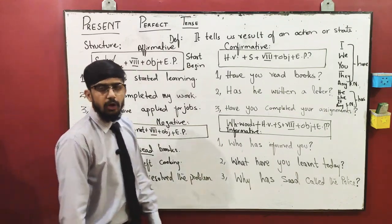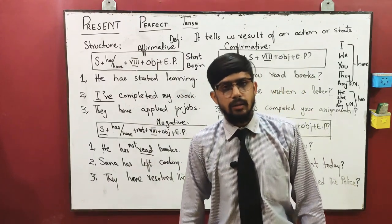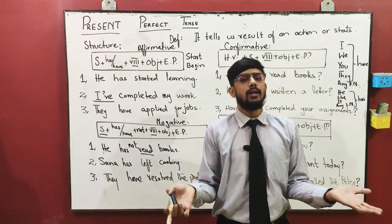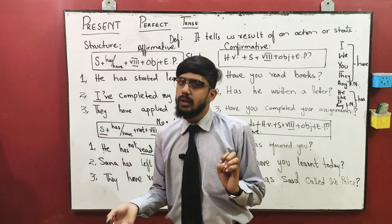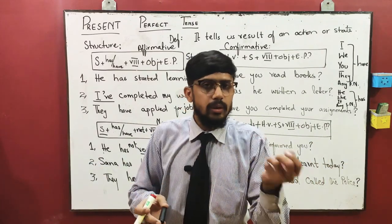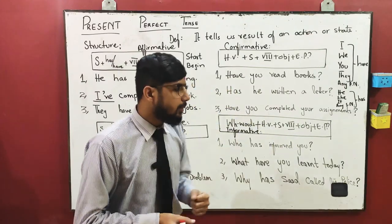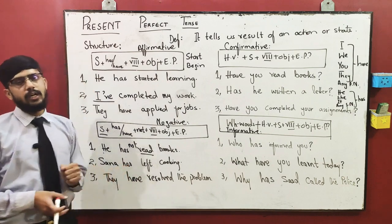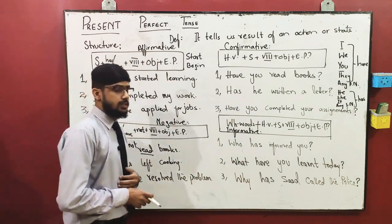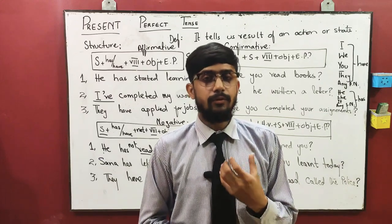They have resolved the problem. Unhonne problem hal kar di hai, masla ka hal nikaal liya hai. Which is very difficult - many people create problems but very few people solve them. So let's come towards the third sentence, that is called confirmative sentence - a sentence in which we confirm something. The answer comes in yes or no.